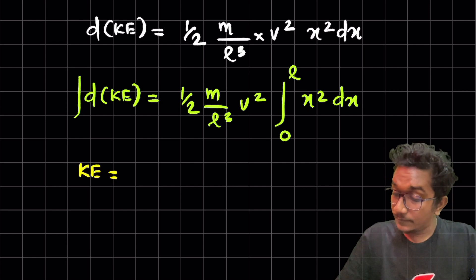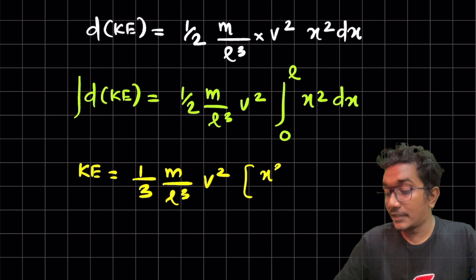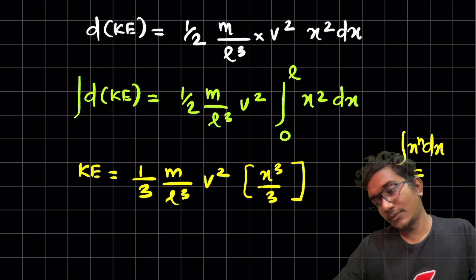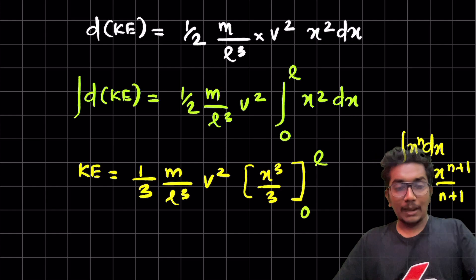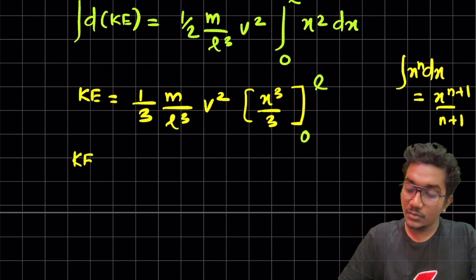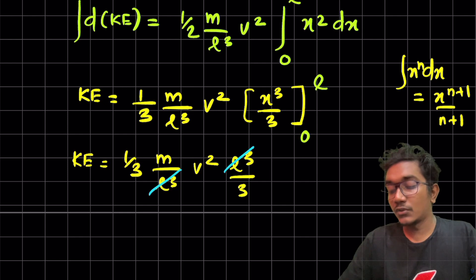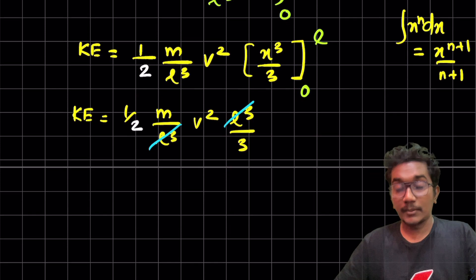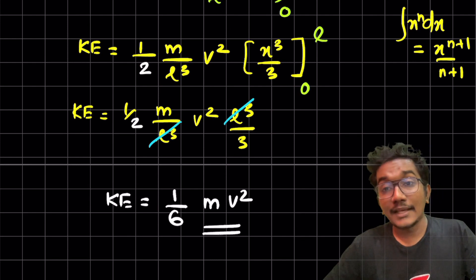The total kinetic energy equals (1/2)(m/l³)·v² times the integral of x²·dx from 0 to l. The integral of x² dx is x³/3 — using the formula ∫xⁿdx = xⁿ⁺¹/(n+1). Applying the limits 0 to l gives l³/3. So the l³ cancels, and kinetic energy of the spring = (1/6)mv².